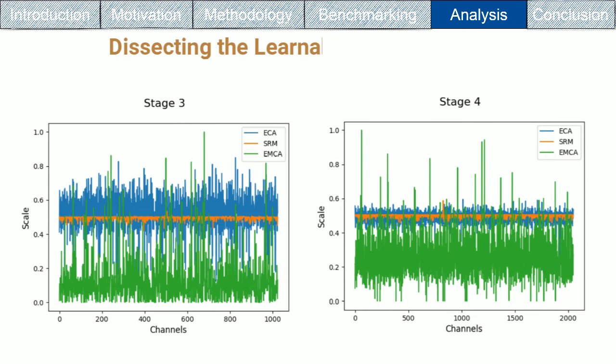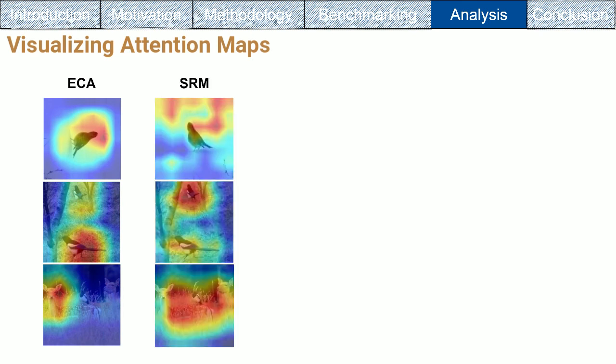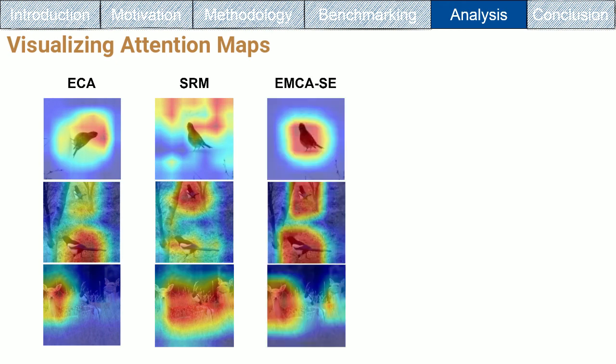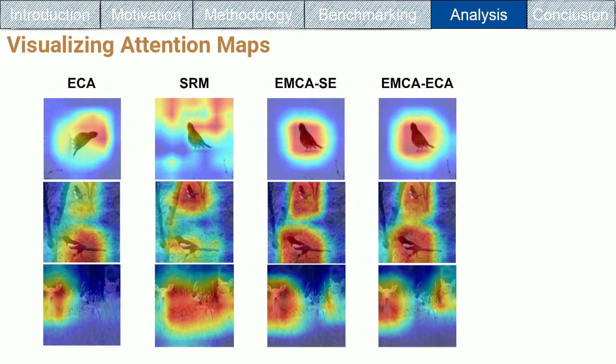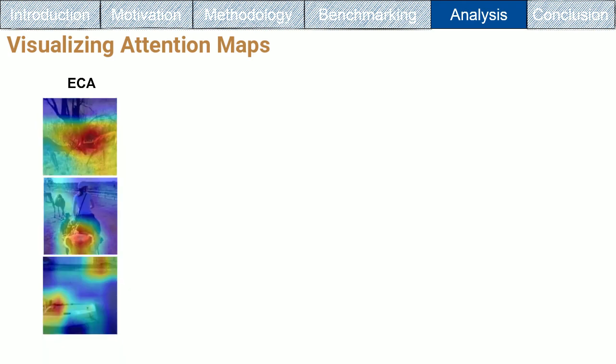In order to validate the effectiveness of EMCA module more intuitively, we sample six images from ImageNet dataset. We use GradCAM to visualize their heat maps at the last attention module based on ResNet50. As shown, our proposed EMCA module allows the classification model to focus on more relevant regions with more object details, which means the EMCA module can effectively improve the classification accuracy.